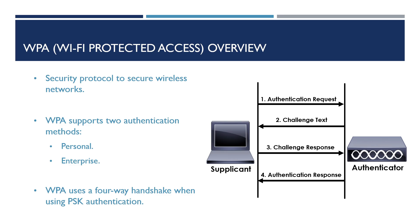WPA utilizes a four-way handshake when authenticating clients using a pre-shared key, as shown on screen. The process involves exchanging messages between the client, known as the supplicant, and the access point, known as the authenticator. The supplicant uses the pre-shared key to build and exchange encryption key content. Importantly, the process will never send the pre-shared key over the air.